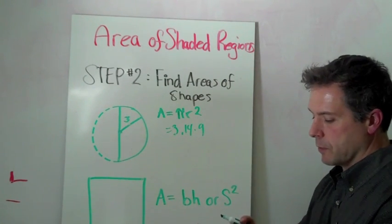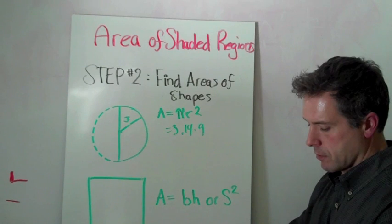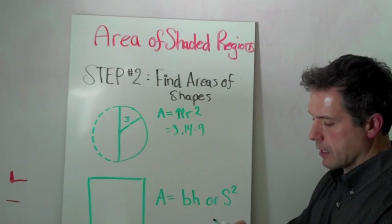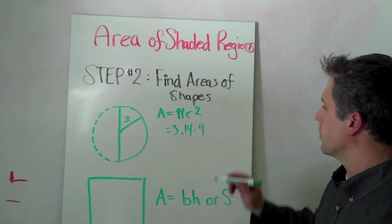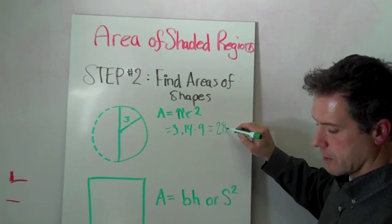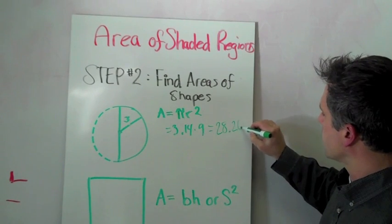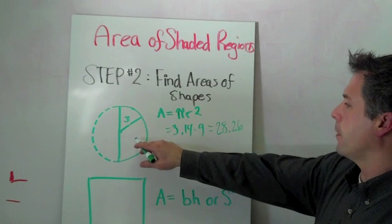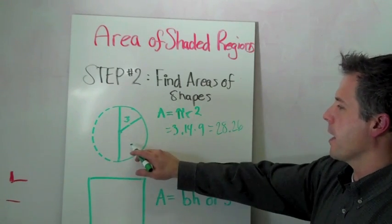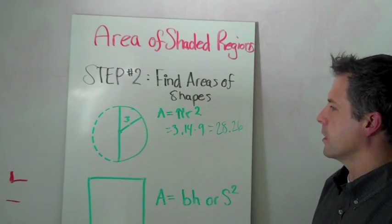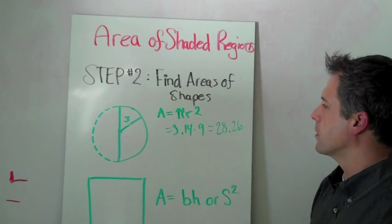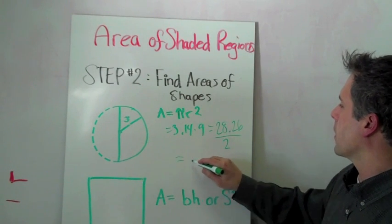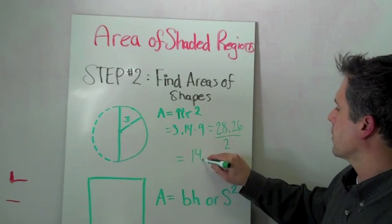So when we turn on our calculator and we have 3.14 times 9, that's going to equal 28.26 units squared. But once again, we don't have a circle in this shape - we had a half circle, not a circle. We just want to know what the area is of a half circle, so we need to divide this by 2. When we divide it by 2, we will get 14.13 units squared.